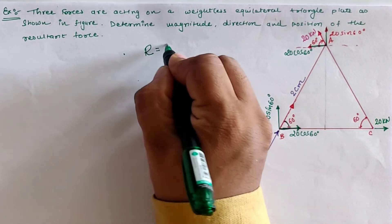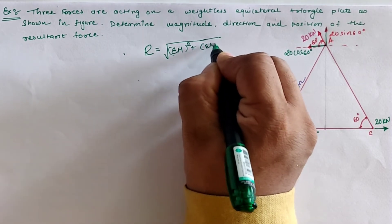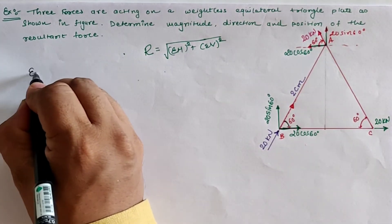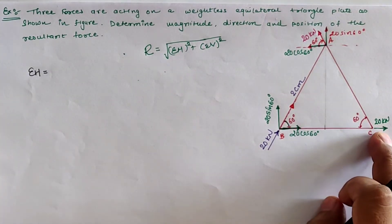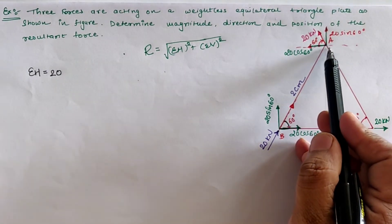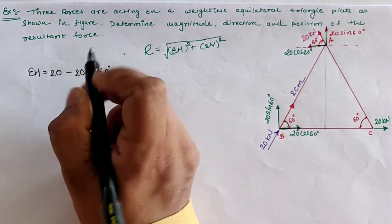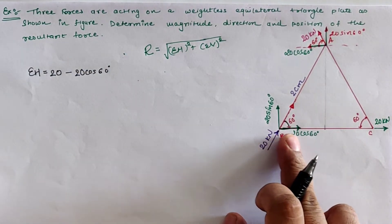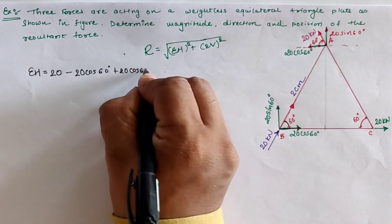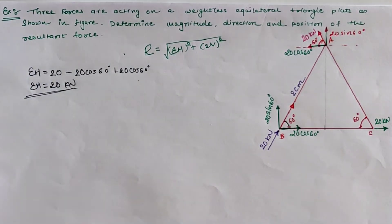For the resultant, we know that the resultant value is the square root of (Sigma H)² plus (Sigma V)². First we calculate Sigma H. The 20 kN is in the horizontal direction so it is positive 20. The 20 cos 60 at one location is in the negative direction, so it is minus 20 cos 60. The other 20 cos 60 is in the positive direction, so it is plus 20 cos 60. Solving this, Sigma H equals 20 kN.